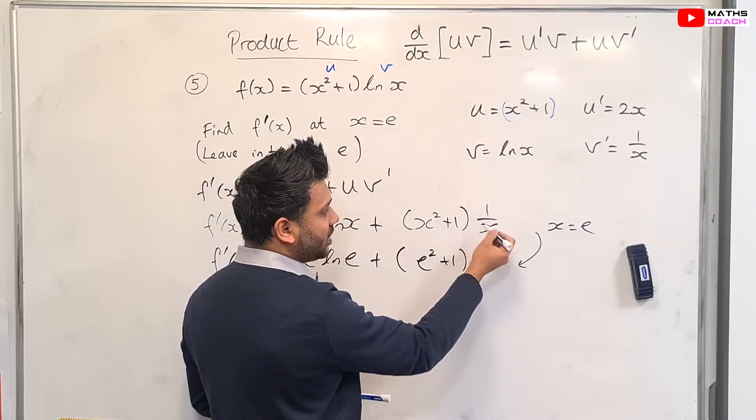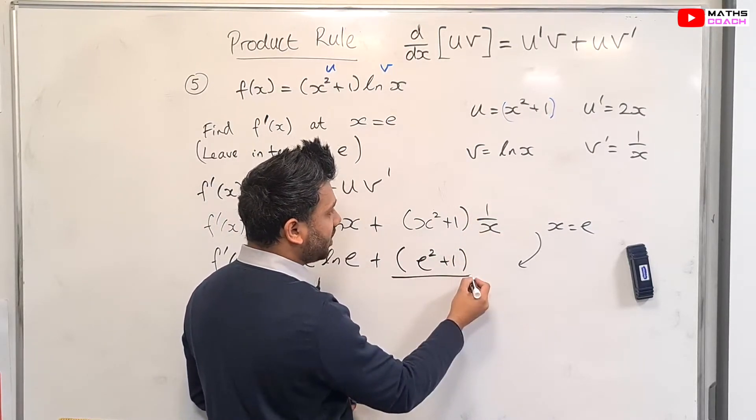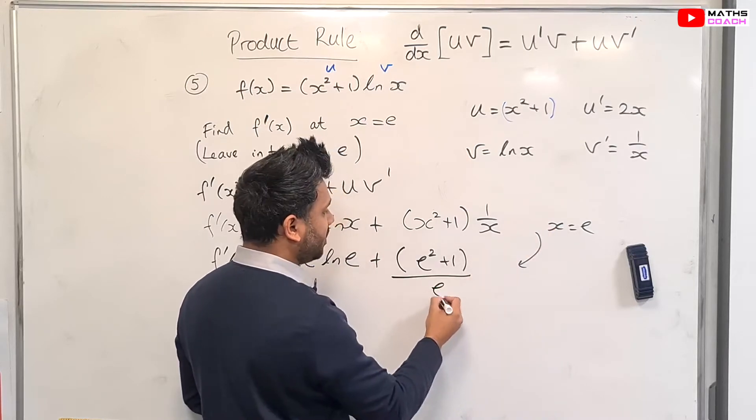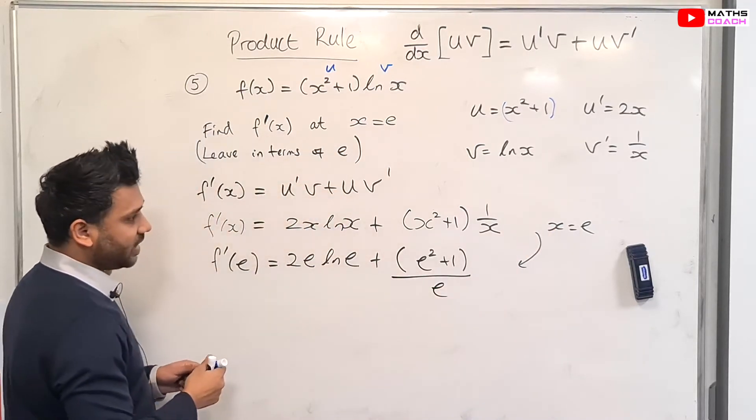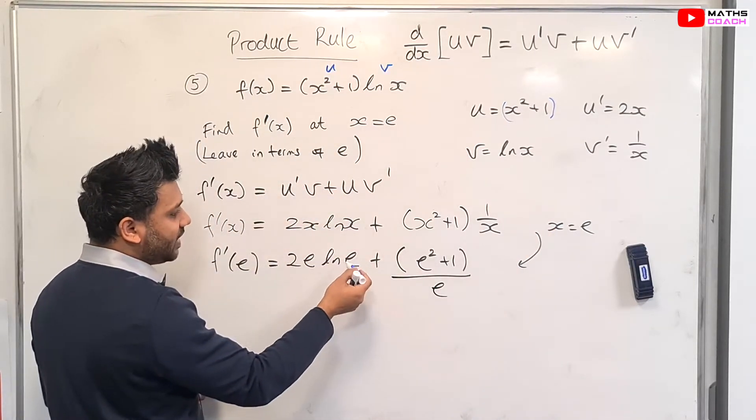we have e squared plus 1. When you multiply by 1 over x, that's the same as dividing the whole thing by x, but x obviously is going to be our e. Well, let's look at this expression. Now, when we have ln e,